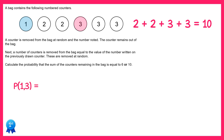The probability of a 1 on the first pick is 1 out of 6, and we multiply this by the probability of a 3 on the second pick which is 3 out of 5. If you multiply these together you get 1 tenth. So this covers all of the possibilities when we pick a 1 first.